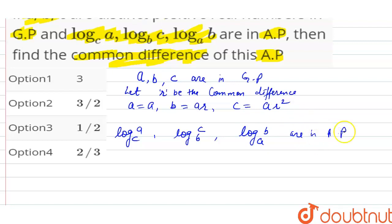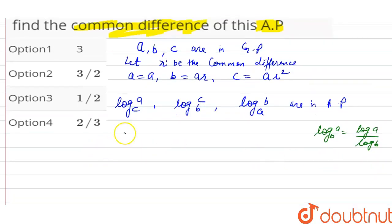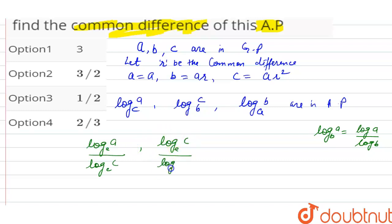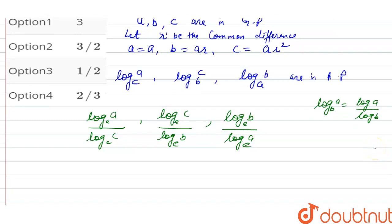We know the base-changing formula: log_A(B) = log A / log B. By using this formula, we can write log A base C as log A / log C, log C base B as log C / log B, and log B base A as log B / log A. Now substituting B = AR and C = AR²: